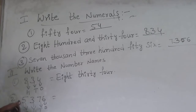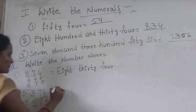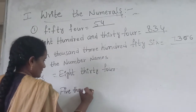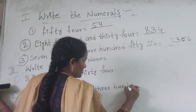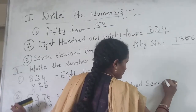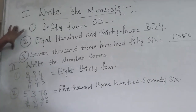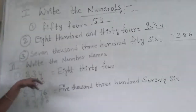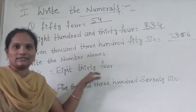In the thousands place, which number is there? Five. So we have 5,376. Write down the number name: five thousand, three hundred and seventy-six. Now we know how to write numbers and how to write number names. Before you write number names, please check the place values and read the number first.